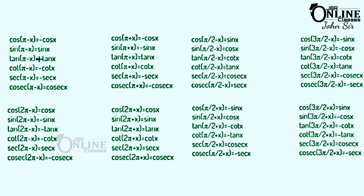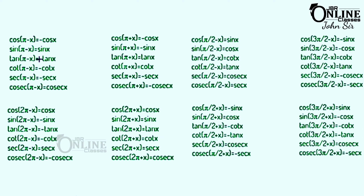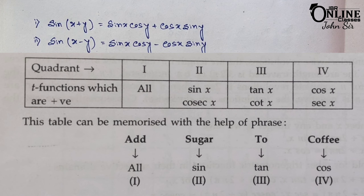For 3π/2, since 3 is odd, the function changes again: cos(3π/2 − x) = −sin x, and sec(3π/2 − x) = −cosec x. Remember: odd multiple of π/2 → function changes; even multiple → function stays the same. Also recall the quadrant rule: first quadrant all positive; second quadrant only sin and cosec positive; third quadrant tan and cot positive; fourth quadrant cos and sec positive.